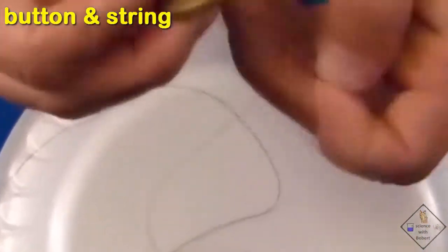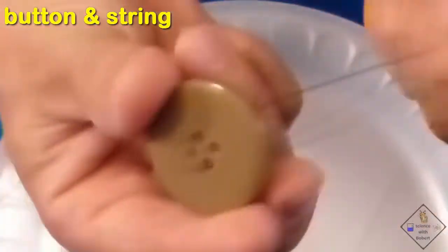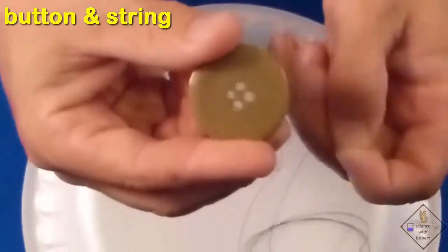He first puts one end of the string through diagonal holes in the button and then ties the ends of the string together in a knot.